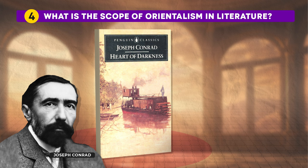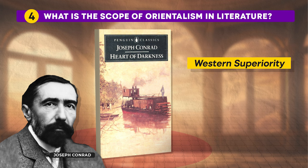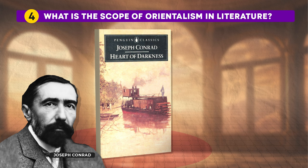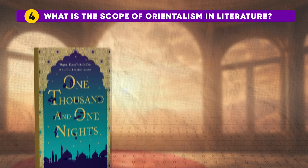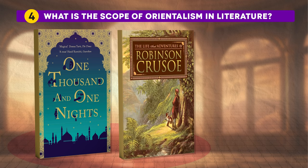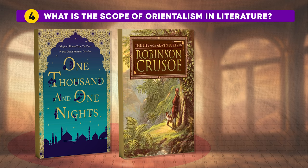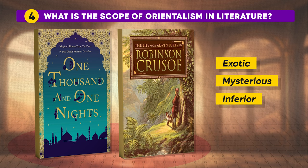In Heart of Darkness, Conrad expresses empathy for the suffering of Africans and strongly criticizes imperialism. However, despite this, he inadvertently reinforces Western superiority and perpetuates imperialistic myths by portraying African lands as wild, dark, mysterious and backward, depicting African people as primitive, barbaric and greedy, and labeling African culture as wicked and dreadful. Similarly, in works like One Thousand and One Nights or Robinson Crusoe, the East is depicted as exotic, mysterious and inferior to the West — a representation that influenced the colonial mindset and policies of the British Empire.